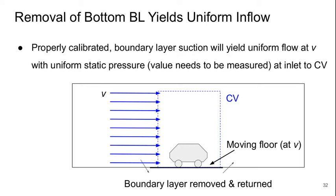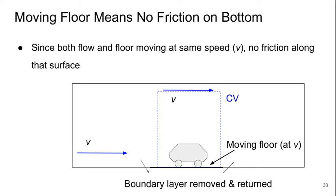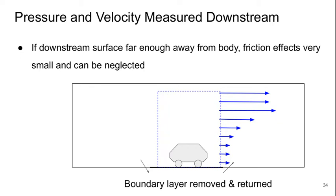The reason we want to remove the boundary layer just before we get to the moving floor section is to yield a highly uniform incoming flow. This takes some calibration, but we can suck off some of that boundary layer and yield a very uniform flow at speed V with uniform static pressure. Since both the flow and the floor are moving at the same speed, there's very little effects of friction along that bottom surface, and we can essentially neglect that contribution. If our downstream surface is far away, friction effects will be very small on that surface and can be neglected.